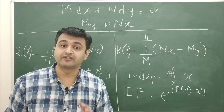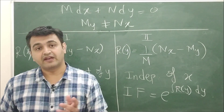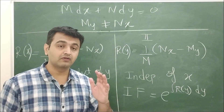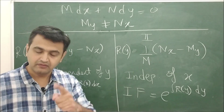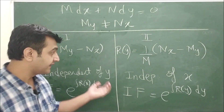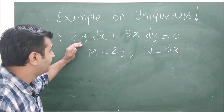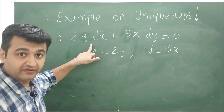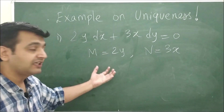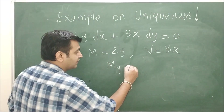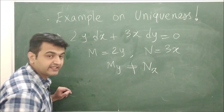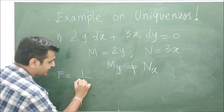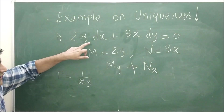Before starting the examples, note that integrating factors need not be unique. For a single non-exact differential equation, you may find more than one integrating factor. Consider the example 2y dx + 3x dy = 0. Here M = 2y and N = 3x, and ∂M/∂y = 2 is not equal to ∂N/∂x = 3, so it is a non-exact differential equation.